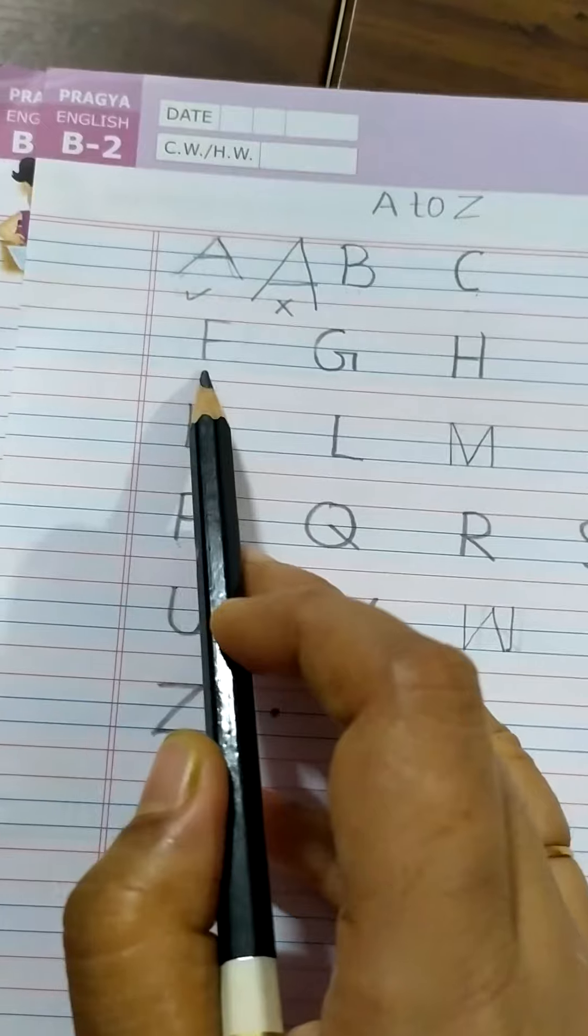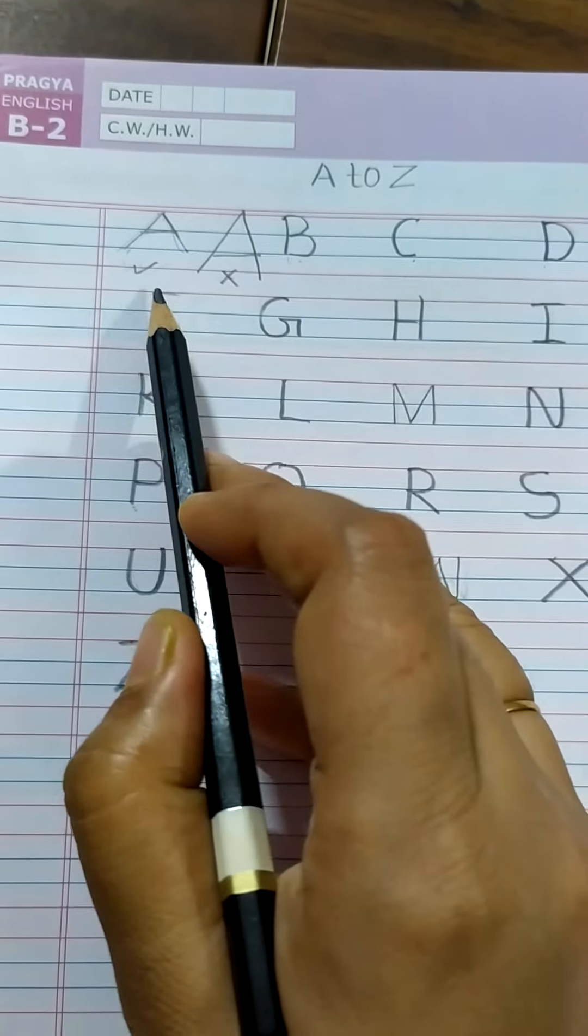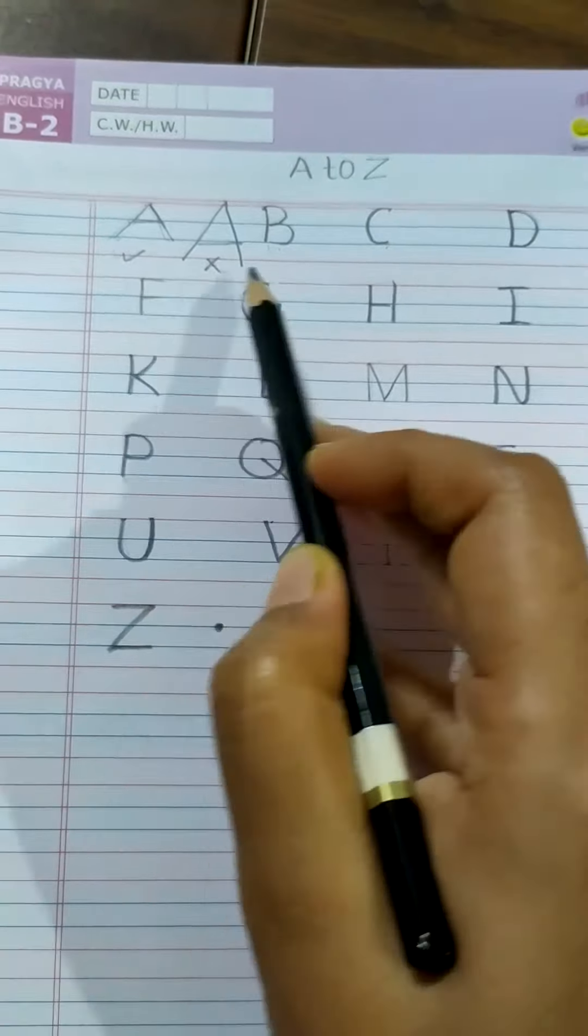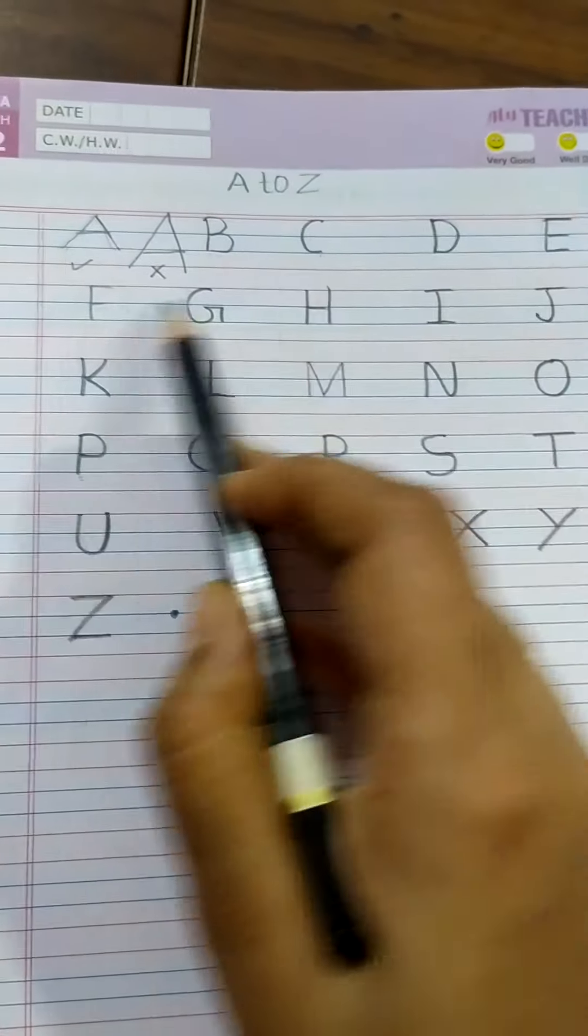Next one is letter F. See, from red line till blue line and put only two sleeping line. If you will see E and F. In E, three sleeping line. F, two sleeping line.